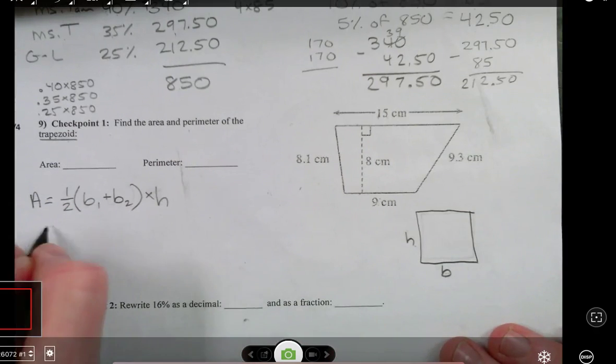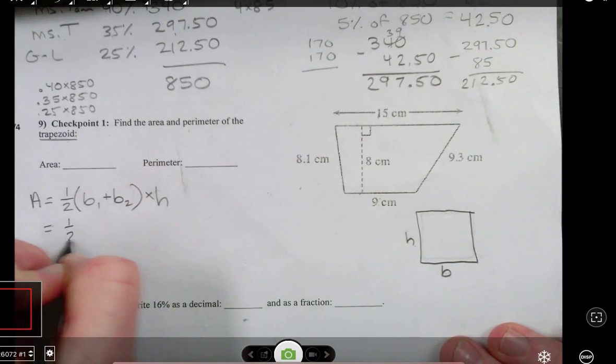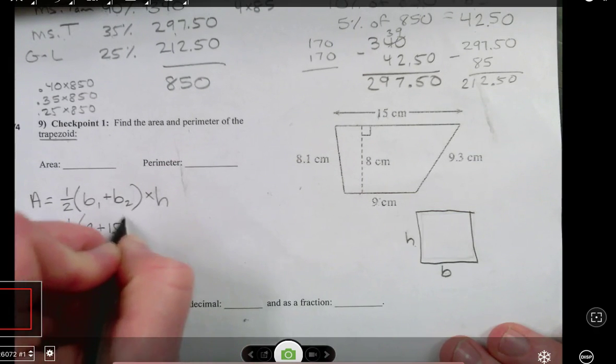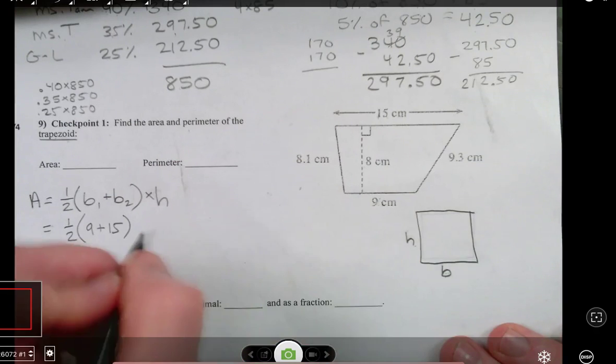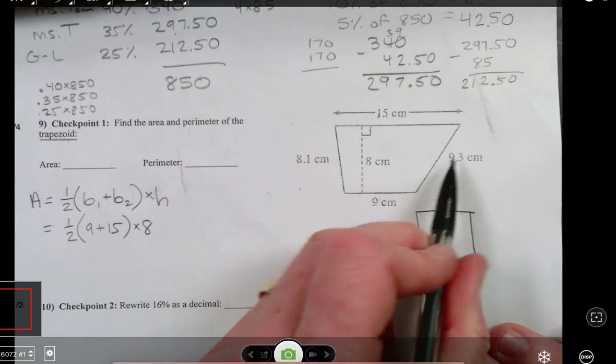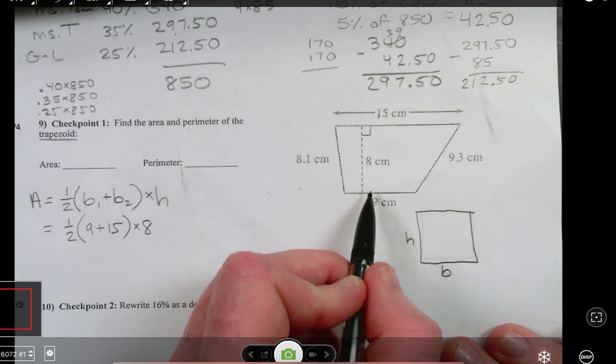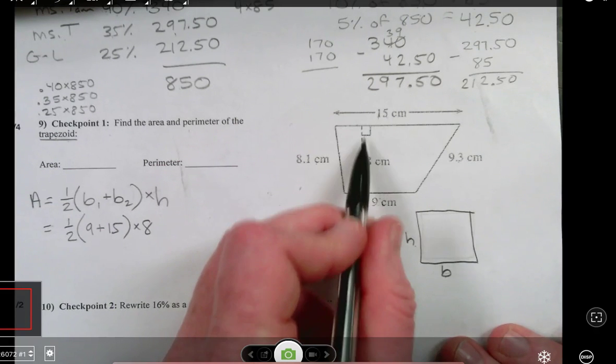Base times height. Okay, so with this problem, I have 9 plus 15 times the height of 8. Okay, it's not these two numbers. It's the straight up and down perpendicular height. Height has to be at a 90 degree angle. That's what that indicates.